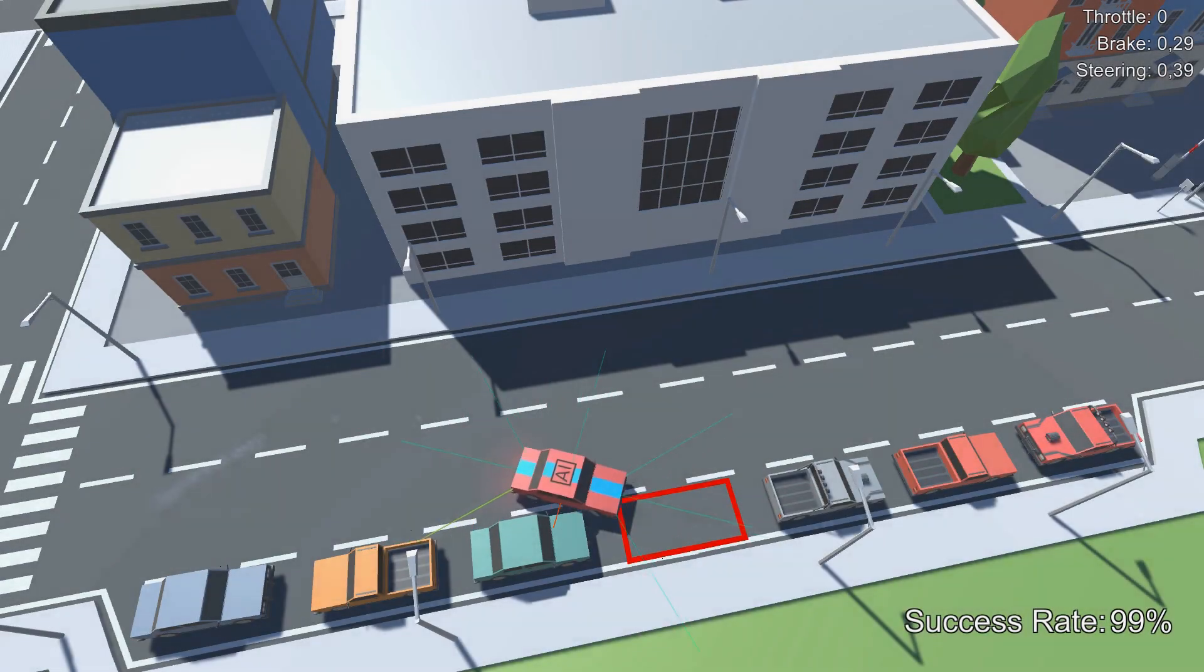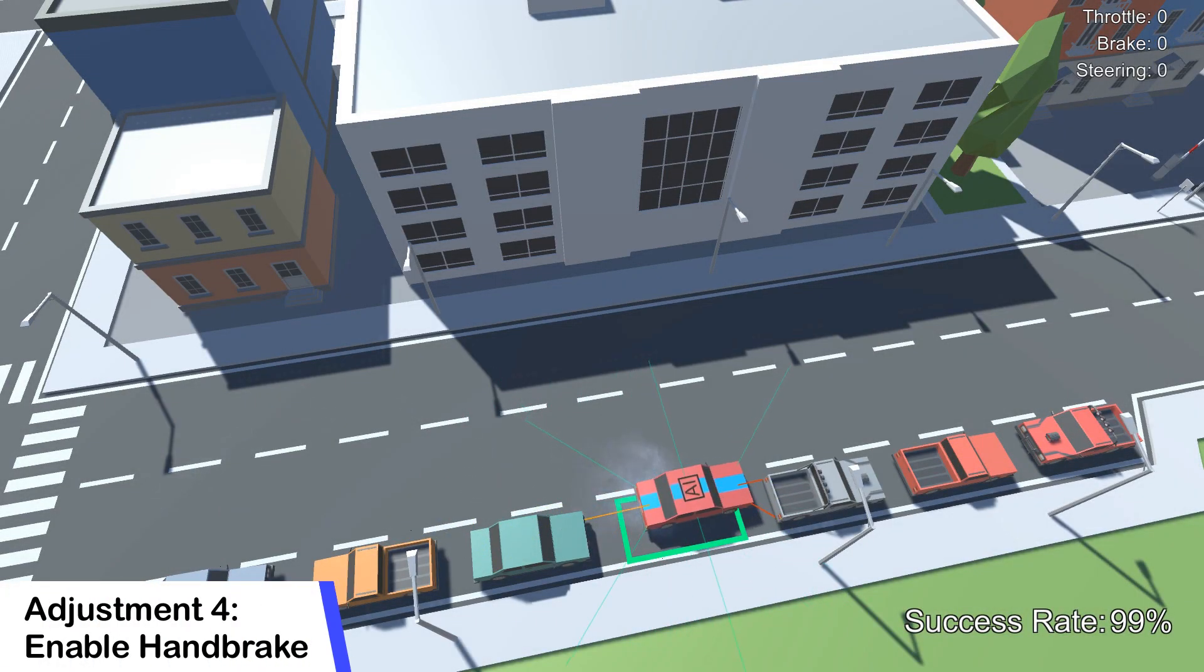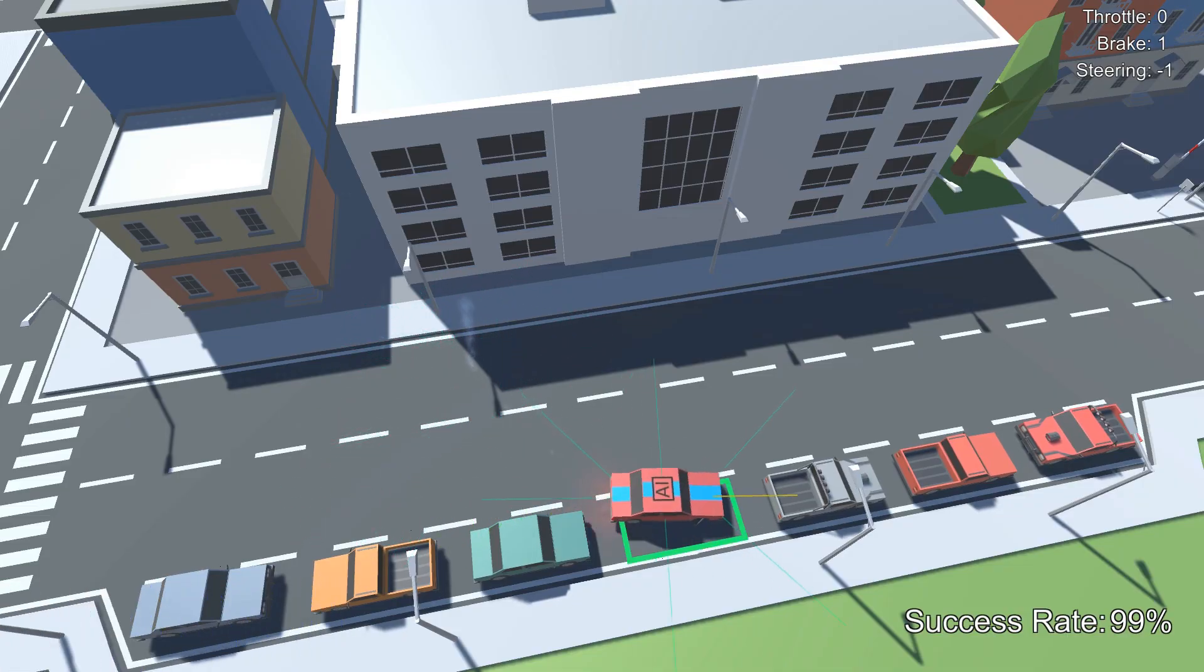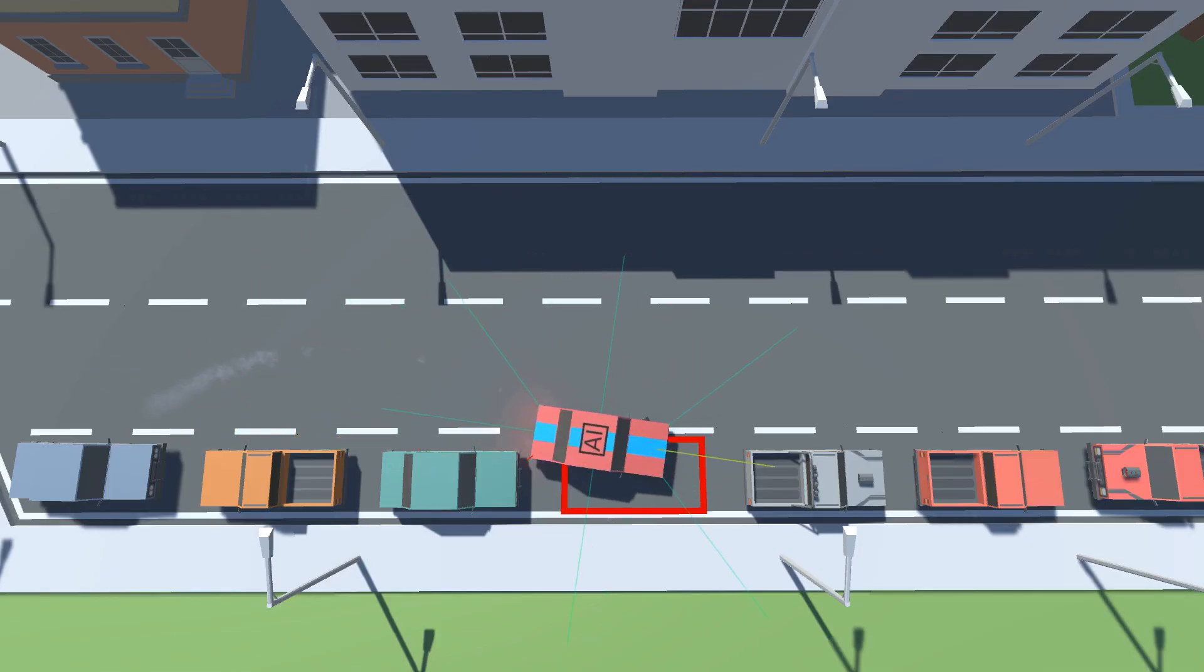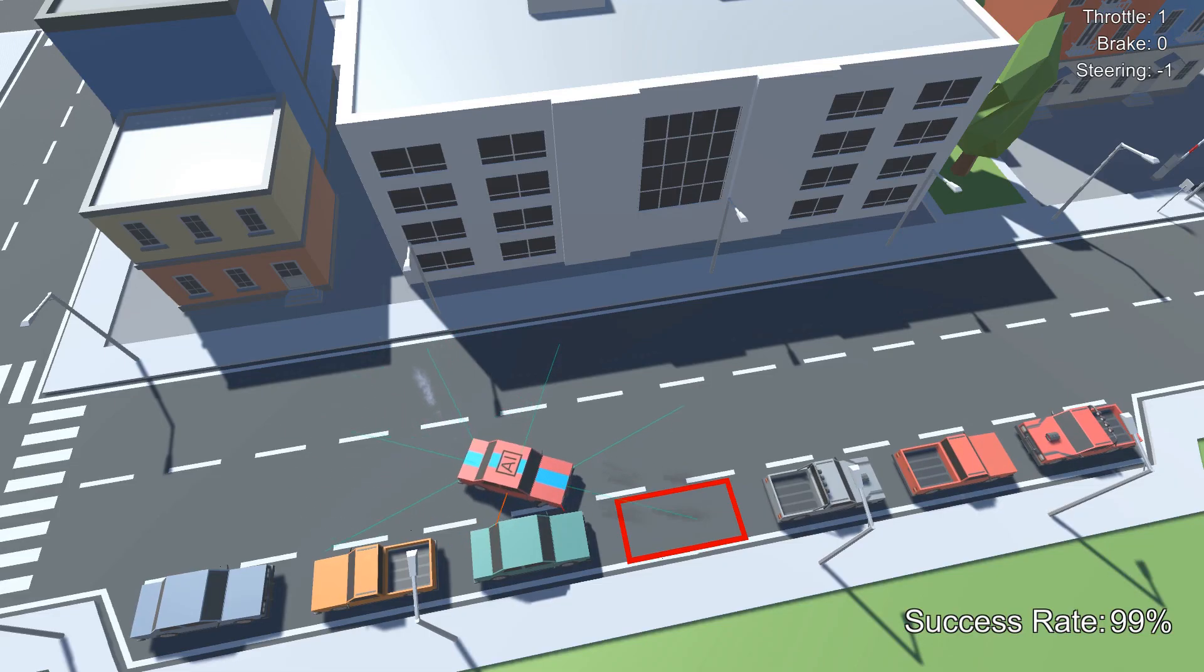Then I also enabled the handbrake again, which I originally disabled in order to make the environment a bit less complex. I was already looking forward to some epic drifts into the parking spot, but unfortunately the agent only used the handbrake in order to get to a full stop more quickly. I mean it's kind of drifting, right?